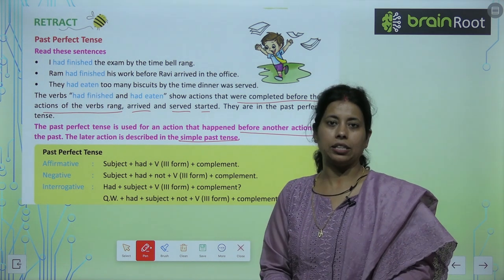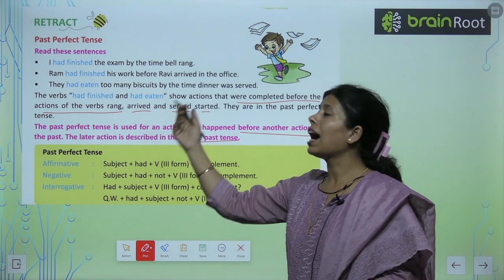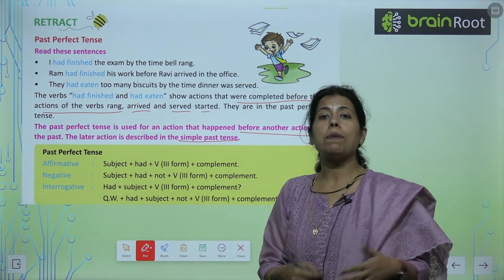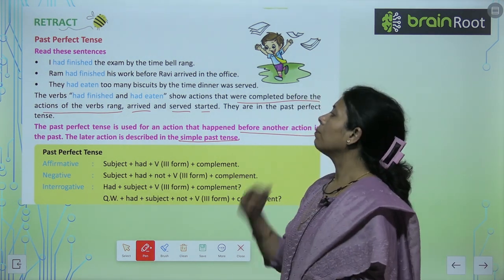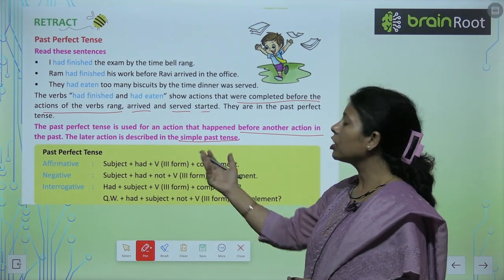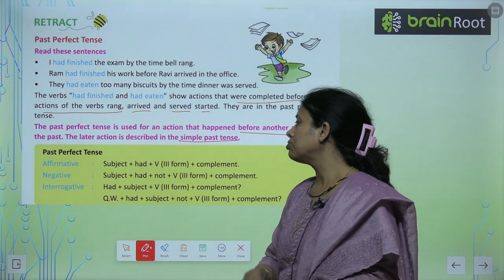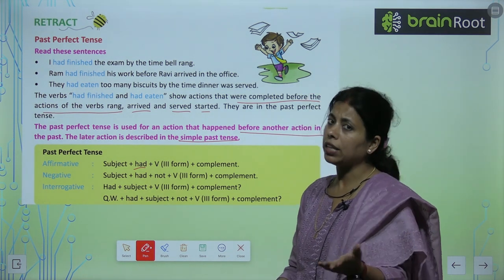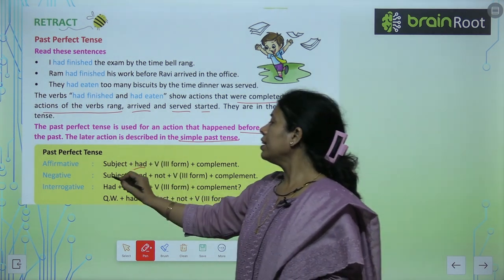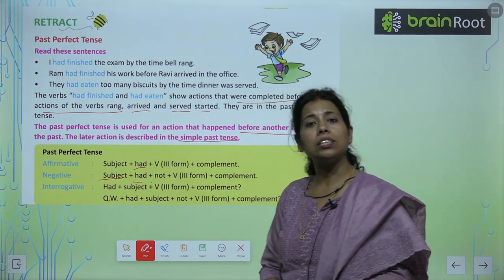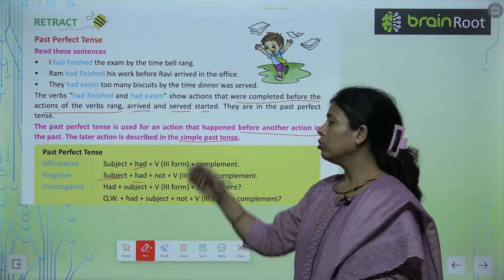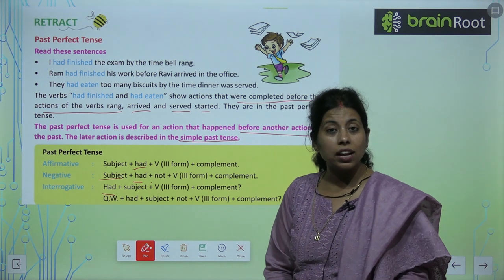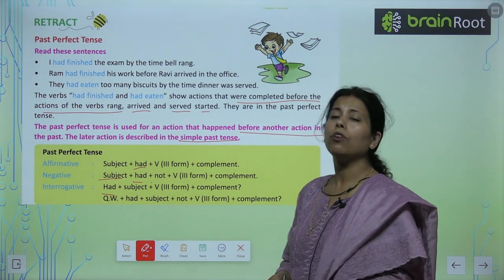Past perfect tense — clear hai ki jo pehle ho gaya uske baare mein baat karte hain. Rules: Affirmative — Subject + had + third form of verb + compliment. Negative — Subject + had not + third form of verb + compliment. Interrogative — Had + subject + third form of verb + compliment.